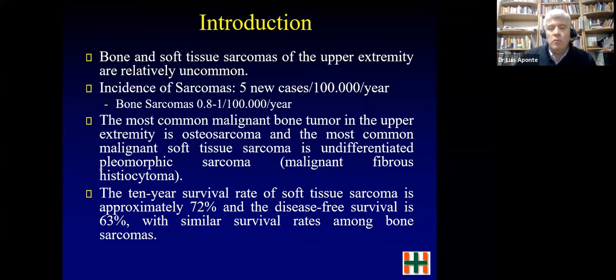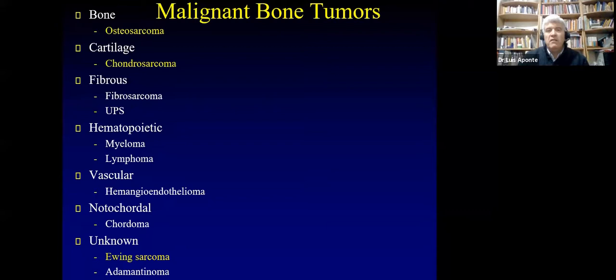We are going to focus on three bone sarcomas: osteosarcoma, chondrosarcoma, and Ewing sarcoma, because the other cases are less common. Myeloma and lymphoma are hematopoietic tumors and we don't deal with them much, and some cases like UPS and fibrosarcoma are more common as soft tissue tumors.